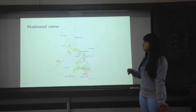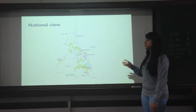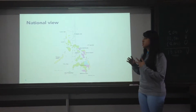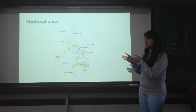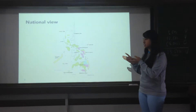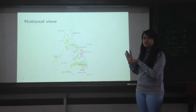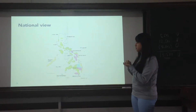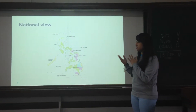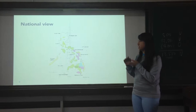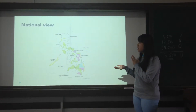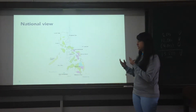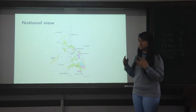In this national view, the colored portions of the Philippines are those parts of the country that are deeply affected by the disease. Most of the infected provinces are located in Visayas and Mindanao, mostly in the south.